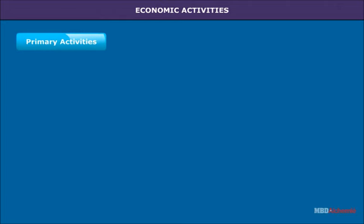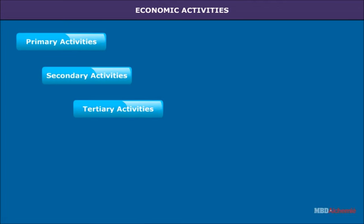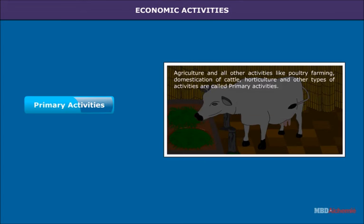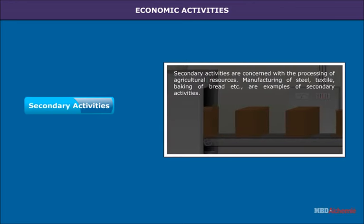Agriculture is an economic activity. The economic activities are grouped into four main categories: Primary, Secondary, Tertiary and Quaternary. Agriculture and all other activities like poultry farming, domestication of cattle, horticulture and other types of activities are called primary activities. Secondary activities are concerned with the processing of agricultural resources, manufacturing of steel, textile, baking of bread, etc.